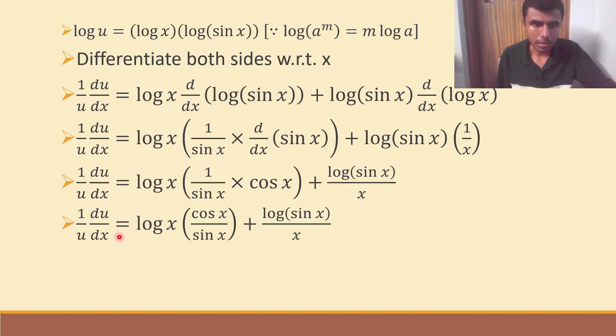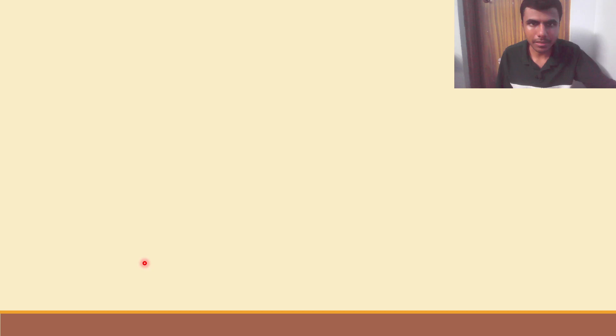So, here I'd get cos x by sine x. And this log of sine x into 1 by x is nothing but log of sine x divided by x. Now, I'd get 1 by u du by dx is nothing but cot x log x plus log of sine x divided by x. I want du by dx, not 1 by u du by dx. So, send this u to the RHS.